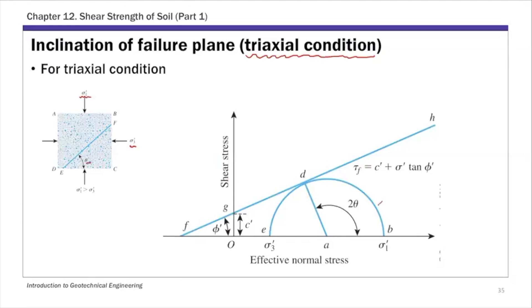We have this Mohr circle at failure with the principal stresses: sigma 1 prime for the major principal stress and sigma 3 prime for the minor principal stress. That defines the Mohr circle, and we also have the failure envelope. We can use this Mohr circle to find the angle of the failure plane for soil elements subjected to this triaxial condition.